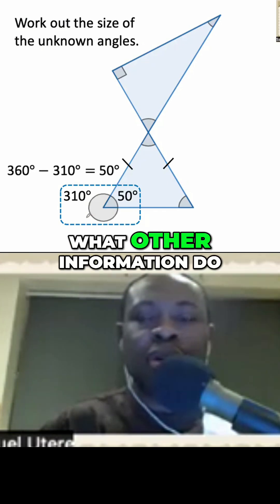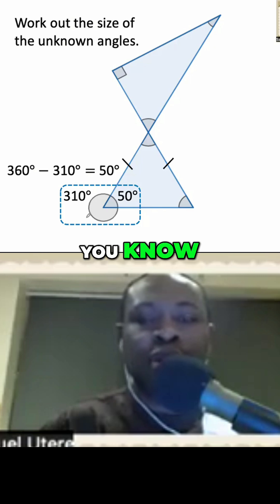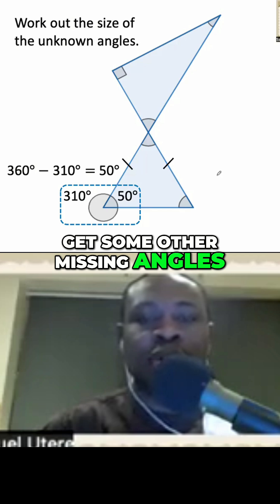But think, what other information do you know or can you see in the diagram that can help you get some other missing angles?